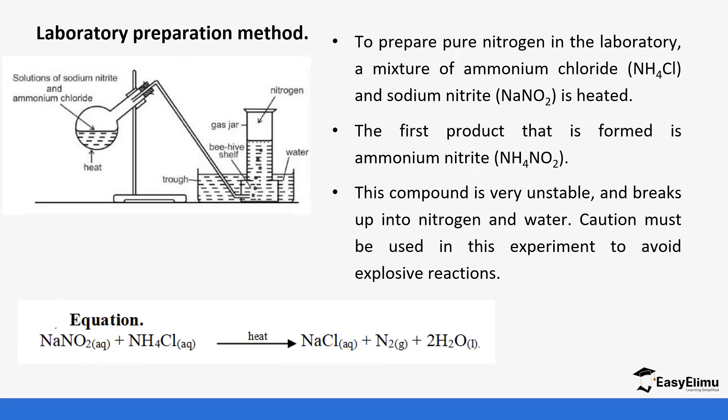Ammonium nitrite that is produced is very unstable, so it breaks up to form nitrogen and water. When we are heating this or doing this experiment, we need to be very cautious because it can form explosive reactions. This equation that is here is the final equation, but remember we said in the first step the sodium nitrite reacts with ammonium chloride to produce ammonium nitrite and sodium chloride. This ammonium nitrite is the one that decomposes to form the water and nitrogen gas that is produced.